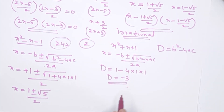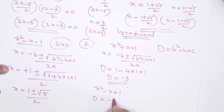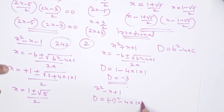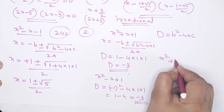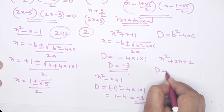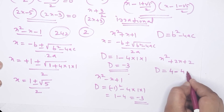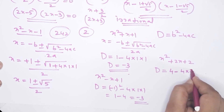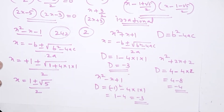Next, x²-x+1: discriminant d = (-1)²-4×1×1 = 1-4 = -3, which is negative. Then x²+2x+2: discriminant d = 4-4×1×2 = 4-8 = -4, also negative.